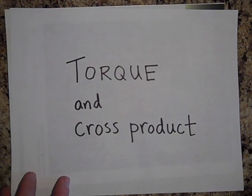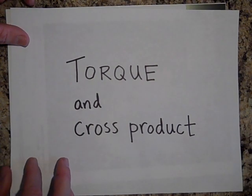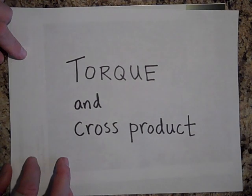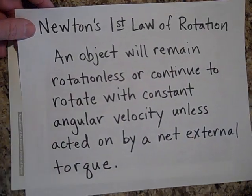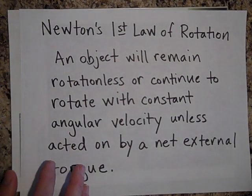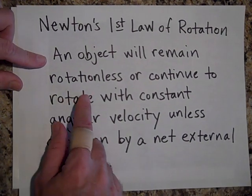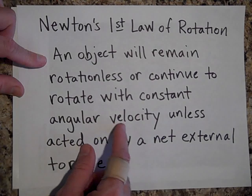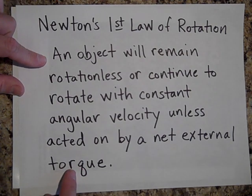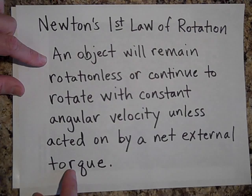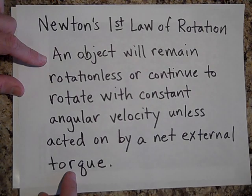I'd like to talk about torque and cross product. Torque is very important to rotation just like force is important to linear motion. Newton's first law of rotation says that an object will remain rotationless or continue to rotate with constant angular velocity unless acted on by a net external torque — just like Newton's first law of linear motion. Things will just continue to rotate unless you change their rotation by applying a torque.